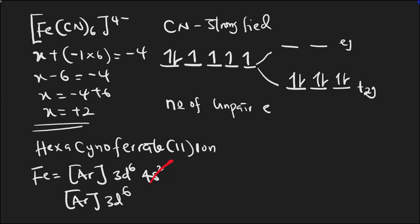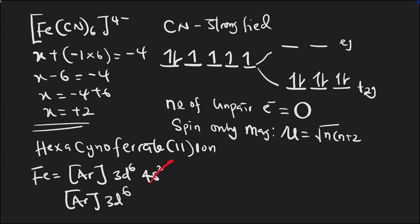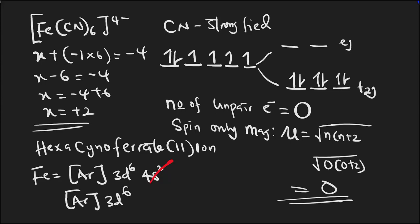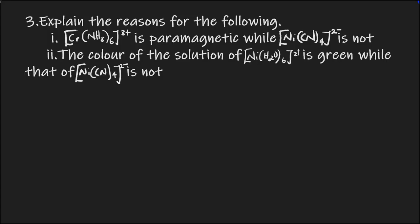The number of unpaired electrons is zero. The spin-only magnetic moment: μ = √(0 × 2) = 0. This complex is diamagnetic since the spin-only magnetic moment is zero. That's all for this question.